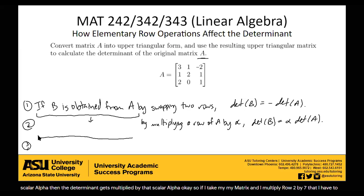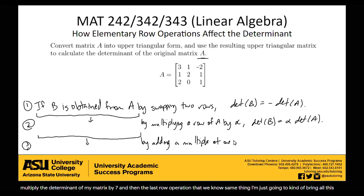And then the last row operation that we know, same thing. So if B is obtained from A by adding a multiple of one row to another, this one's really cool, nothing happens. The determinant of B just equals the determinant of A. So this is a really powerful one. This third one, where you can add multiples of one row to another row, is a very powerful row operation when calculating the determinant.